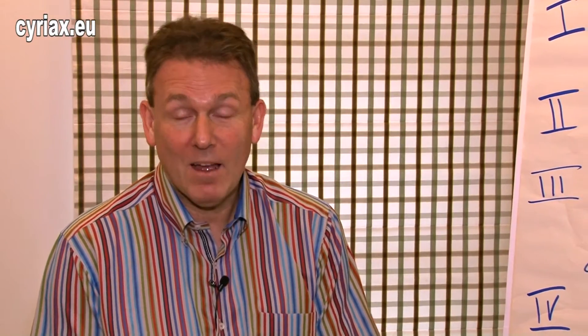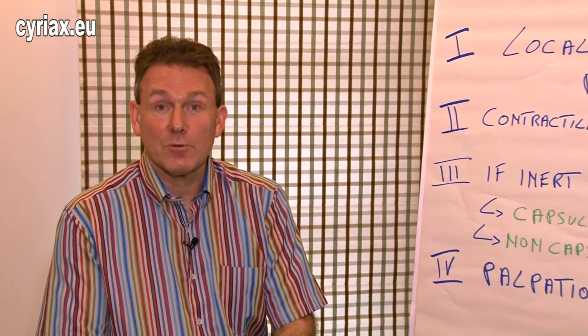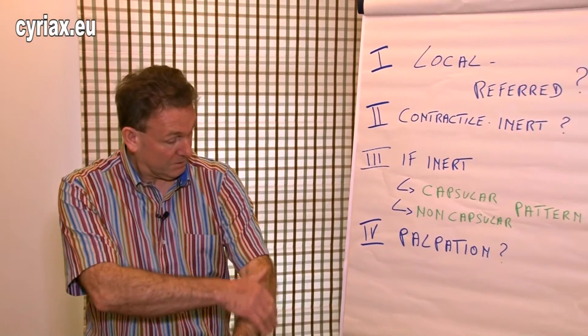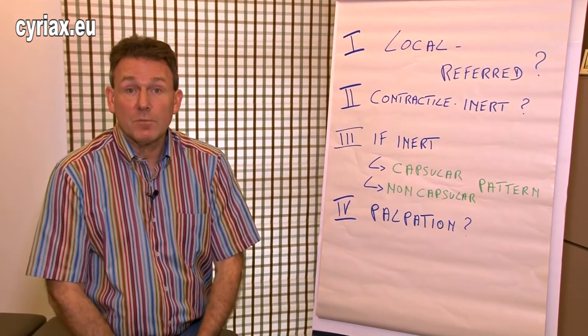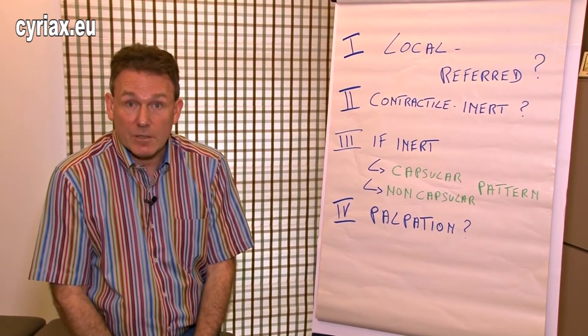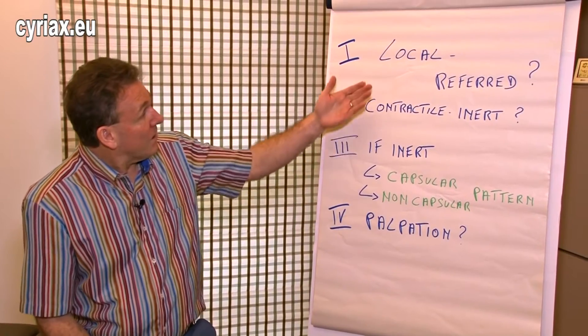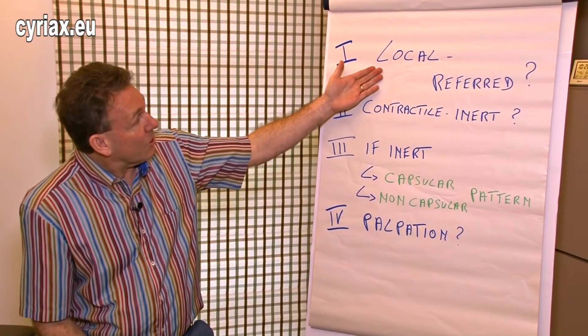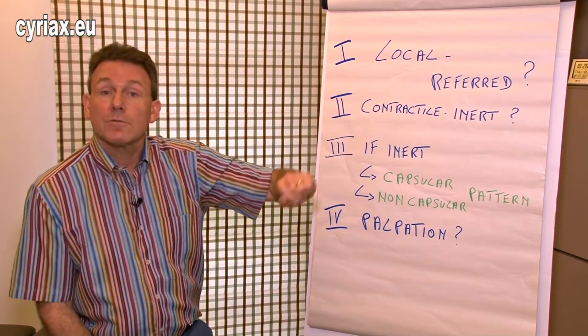The diagnostic system in orthopedic medicine consists of four steps. Let's imagine a patient comes to us complaining of pain in this area. The very first important question is: where is this pain coming from? Does it have a local origin or does it have a referred origin?